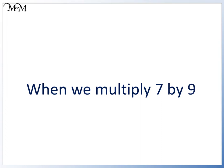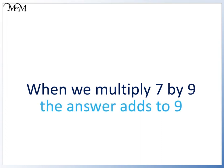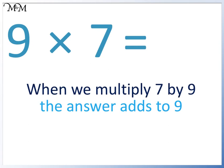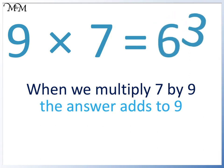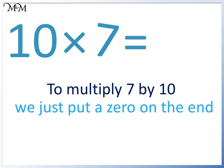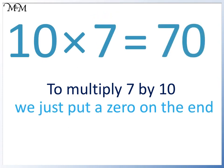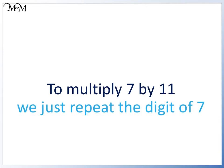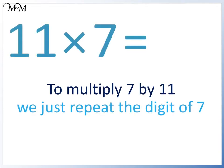When we multiply 7 by 9, the answer's digits add to 9. 9 times 7 equals 63; 6 plus 3 equals 9. To multiply 7 by 10, we just put a 0 on the end: 10 times 7 equals 70. To multiply 7 by 11, we just repeat the digit of 7: 11 times 7 equals 77.